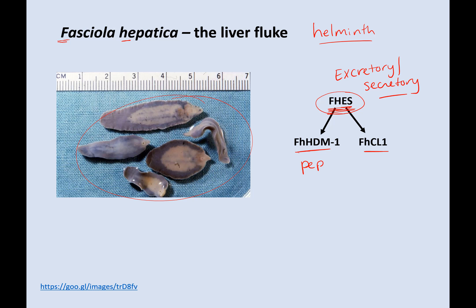They found two main components, and the cool thing is that they were able to synthetically make these. These are peptides, which means amino acids, and FHHDM1 is a 68-mer, which means it's made up of 68 amino acids. You can express this in yeast, which means you can artificially produce these little amino acid peptide chains — so you don't have to go harvest a bunch of liver flukes. That means that if this could be a treatment, it could probably be easily synthesized in the lab.